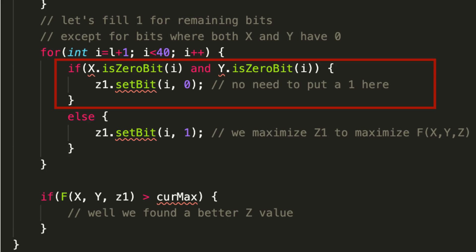I'm iterating from L plus 1 to 40. For the remaining bits, if X and Y both are having zero bit at this position, there is no need to set it to one for Z1. In this case, I'm saying that Z1 set your bit to zero. Otherwise, I have to worry about maximizing my function F(X,Y,Z), so I'm saying Z1 please set your bit to one. When I have set all the bits for Z1, I'm checking the value of F(X,Y,Z1). If it's greater than my current max, well I have actually found a better Z value.